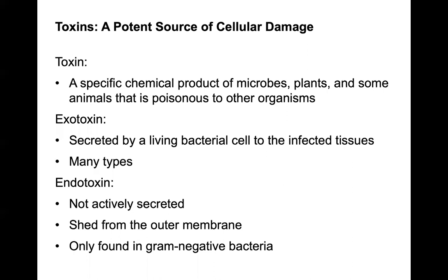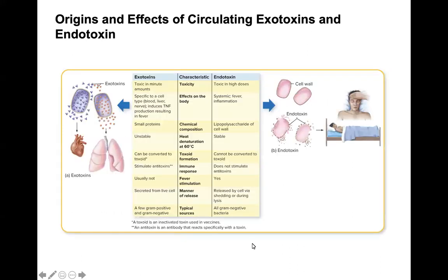We also have toxins, which are a potent source of cellular damage — specific chemical products of microbes, plants, and some animals that are poisonous to other organisms. Exotoxins are secreted by living bacterial cells into infected tissues, and there are many types. Endotoxins are not actively secreted; they are only released when the cell wall is lysed, and we typically find those in gram-negative bacteria. There is a table comparing exotoxins versus endotoxins — spend some time understanding the differences between the two.